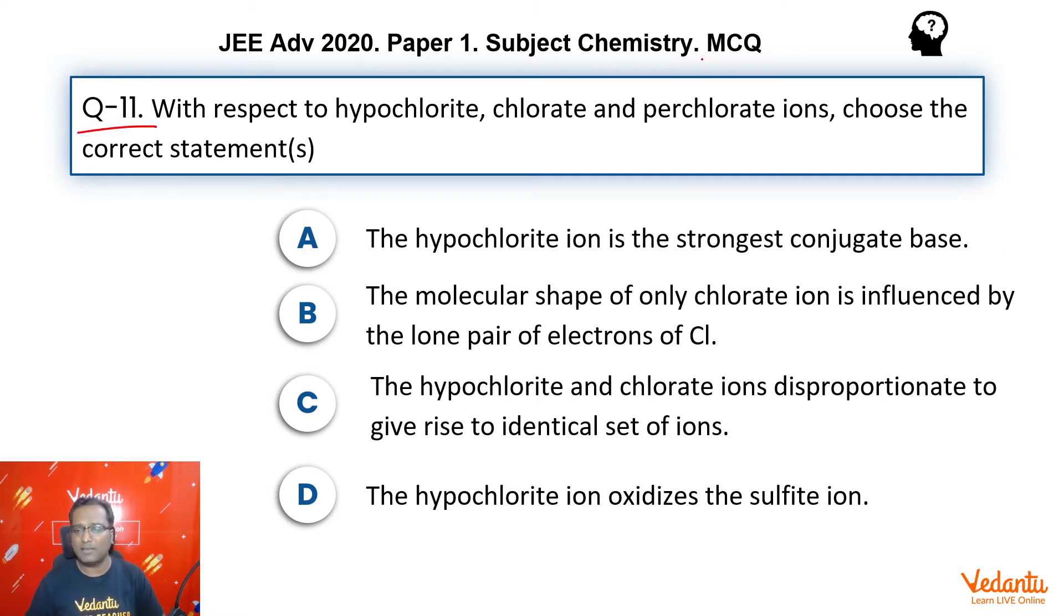This question is an MCQ type, that is multiple correct type question, so be very careful. It talks about hypochlorite, chlorate, perchlorate, so definitely this question is from P-Block chapter and group 17. Now, let's move ahead point by point.